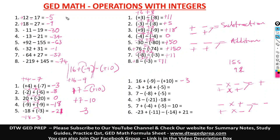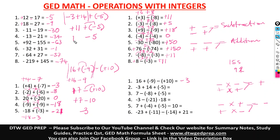Let's work on this: negative 3 plus 14, plus negative 5. Take these two first — negative 3 and positive 14, negative and positive, we subtract — giving 11, which takes a positive sign. Now drop what is left: positive times negative gives negative 5. Positive 11 and negative 5 — we subtract — getting 6, taking a positive sign. This is positive 6.